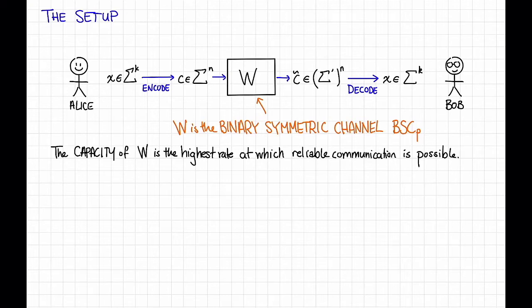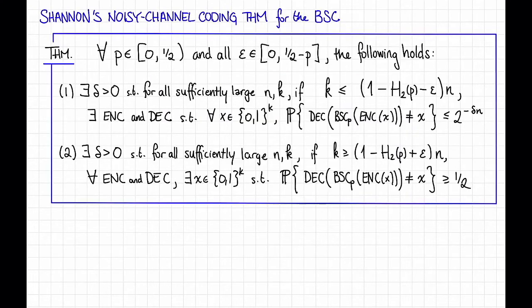In this video we will formalize and then sketch the proof of the following theorem. The theorem says that the capacity of the binary symmetric channel with parameter P is 1 minus the binary entropy of P. Here is a more precise way of stating this theorem. For all parameters P between zero and a half, and for all epsilon between zero and a half minus P, the following holds.